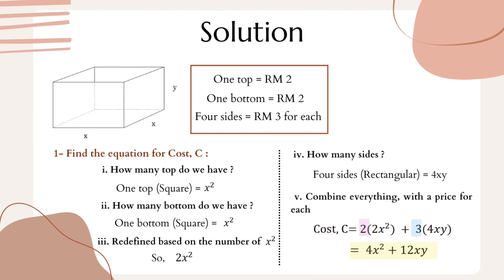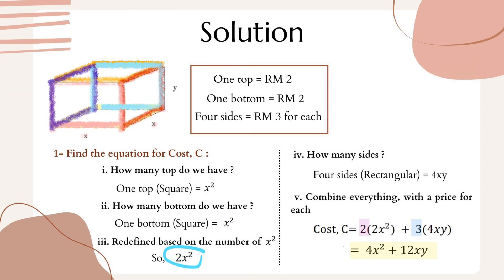We determine how many top, bottom, and side surfaces we have. The top and bottom surfaces are square-shaped with side x, so each has area x², and combining both gives 2x². For the four rectangular sides, with length x and width y, each side has area xy, so all four sides give 4xy. The cost equation is found by multiplying area by price: (2)(2x²) + (3)(4xy) = 4x² + 12xy.